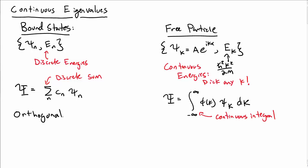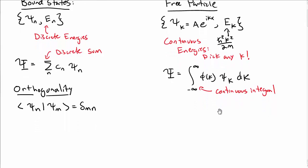In the discrete case, we had an idea of orthogonality between two stationary states, say psi n and psi m, which gives the Kronecker delta, delta mn — one if they're the same, zero if they're not. So do we have something similar for a free particle or continuous case? Would you have the inner product of psi k and psi k prime be like Kronecker delta k, k prime?